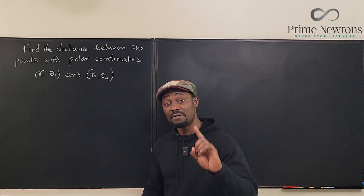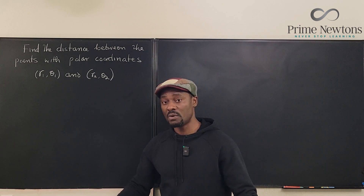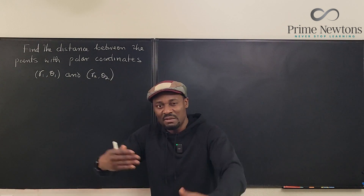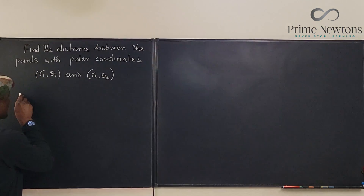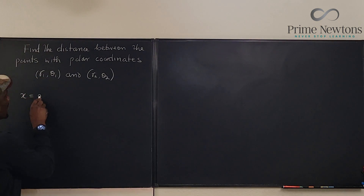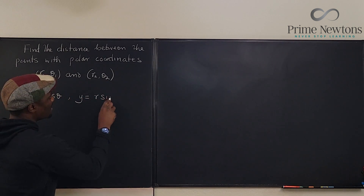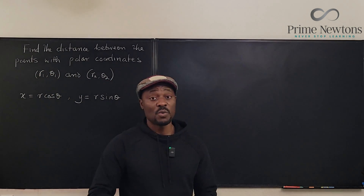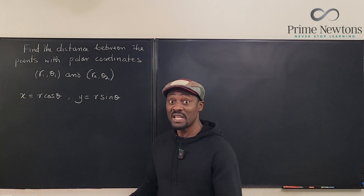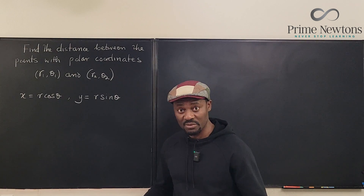The first thing we need to do is to change these coordinates to Cartesian form. Even though we don't have numbers, we just follow the same principle. We know generally that x is always r cosine theta, and y is always r sine theta. Now we don't know what r is, we don't know what theta is, so this exercise really expects us to do all our calculations without numbers — you have to do the algebra.